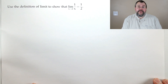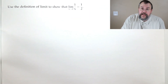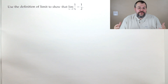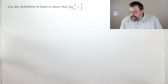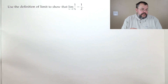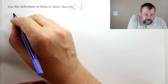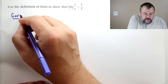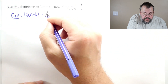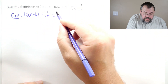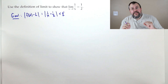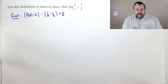Let's do it again. Use the definition of limit to show that the limit as x goes to 2 of 1/x equals 1/2. If you plug 2 into 1/x you get 1/2 — that seems reasonable. Our goal is to have |f(x) − L| = |1/x − 1/2| less than epsilon, where epsilon is some arbitrarily small number.